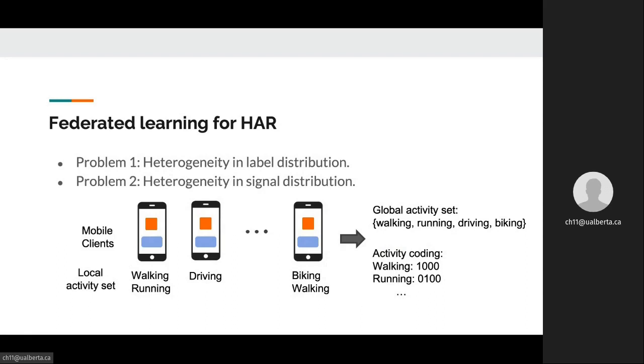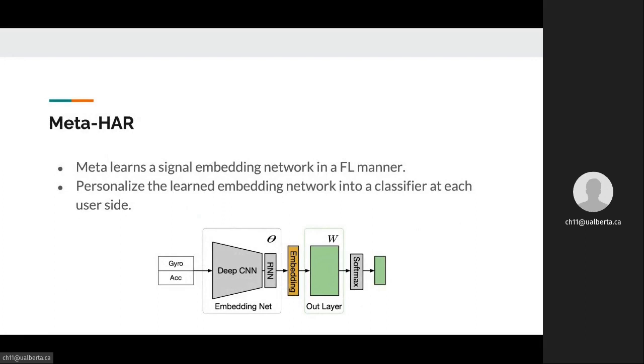Furthermore, apart from the statistical challenges, applying federated learning in real-world applications requires significant effort. For example, to learn a global model for all clients, we need to know the global activity set with all possible activity types. This determines the output size of the classifier. We also need to ensure labels are consistent across users. For example, on local datasets of different users, we need to make sure the first class always represents the same activity. To overcome these statistical challenges and eliminate tedious labeling work when applying federated learning for HAR,